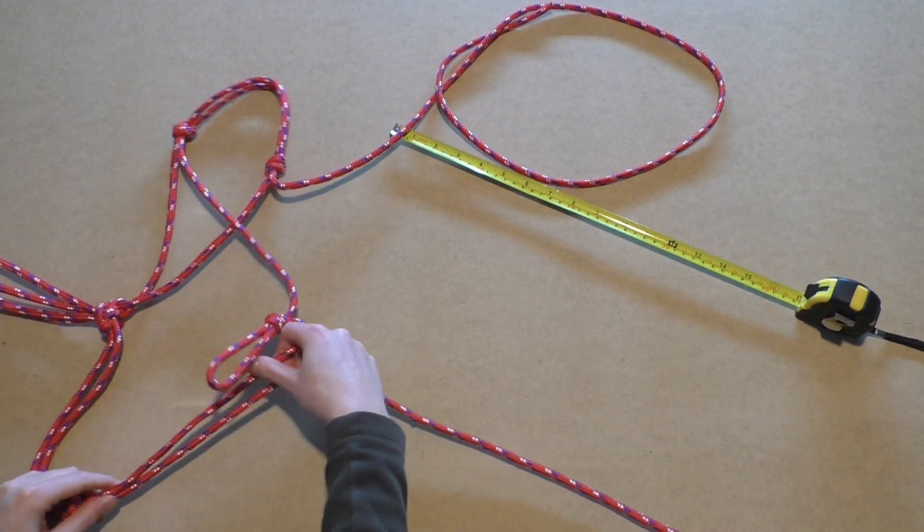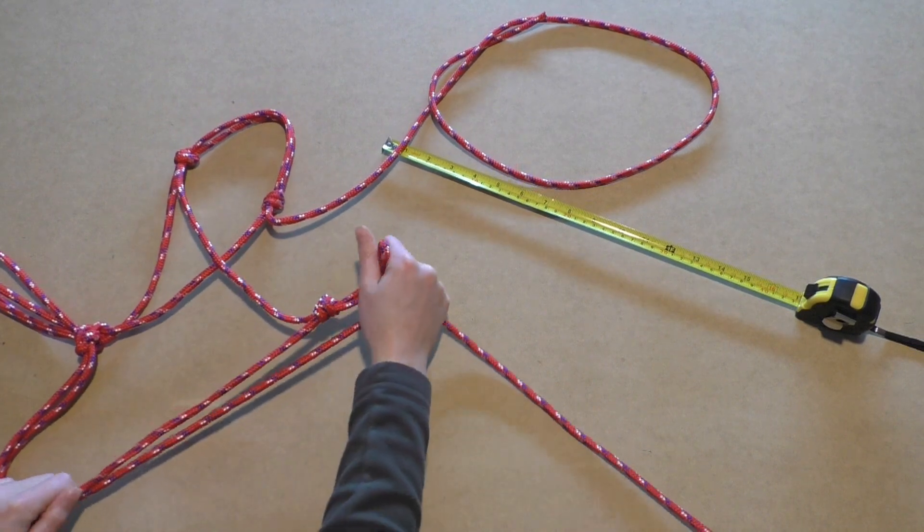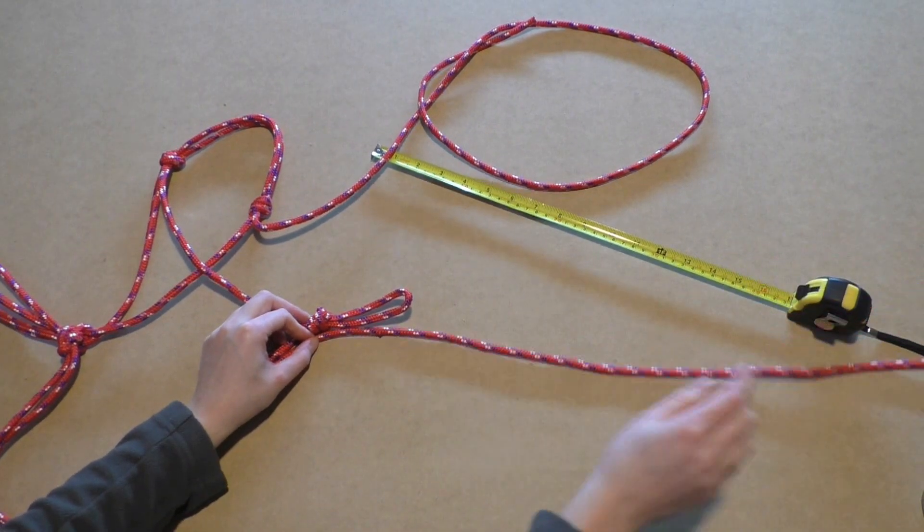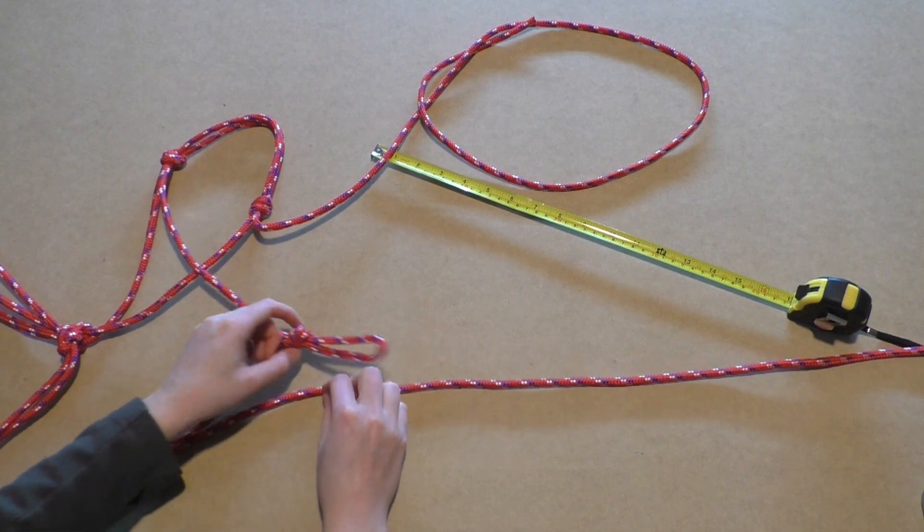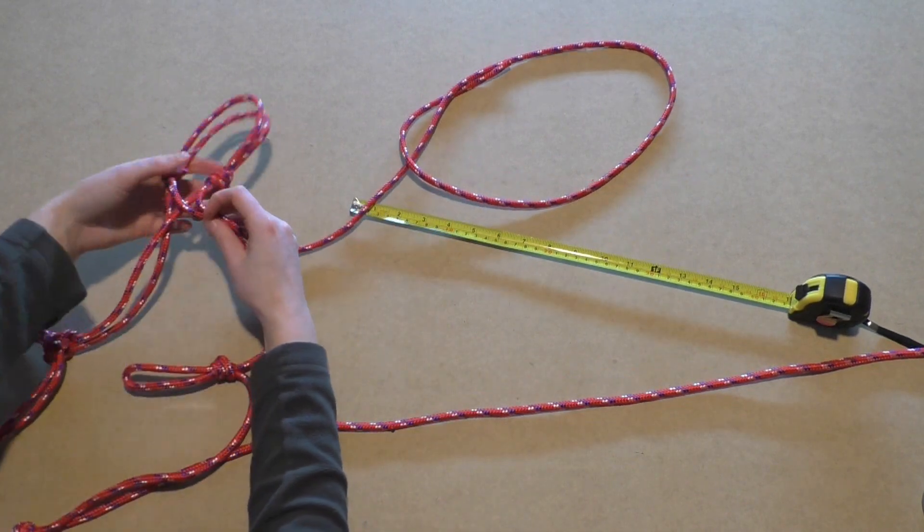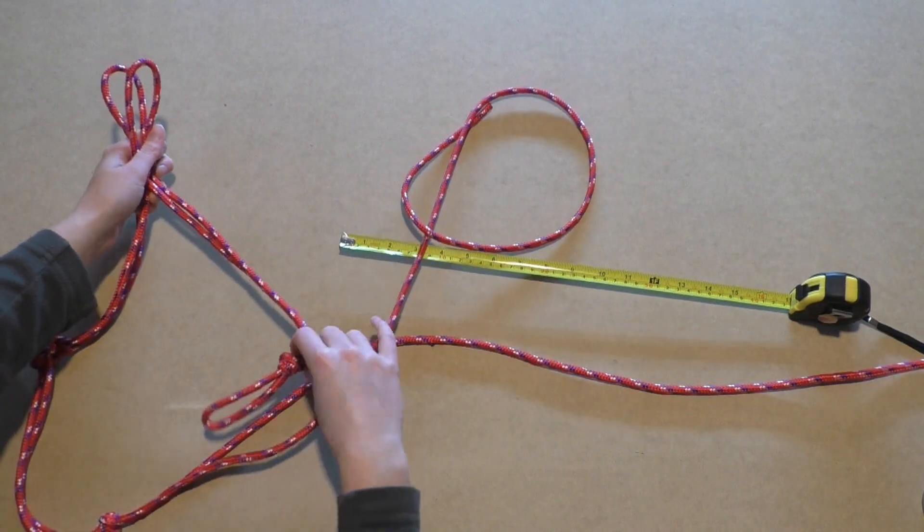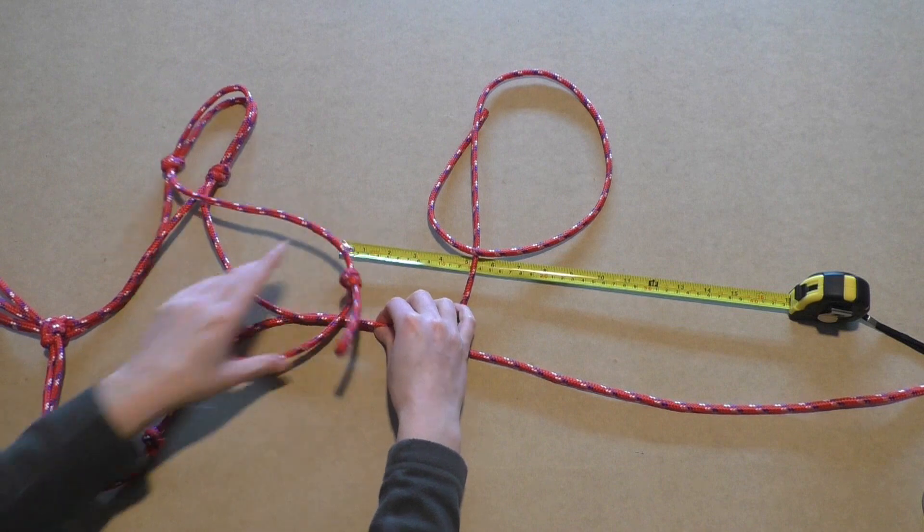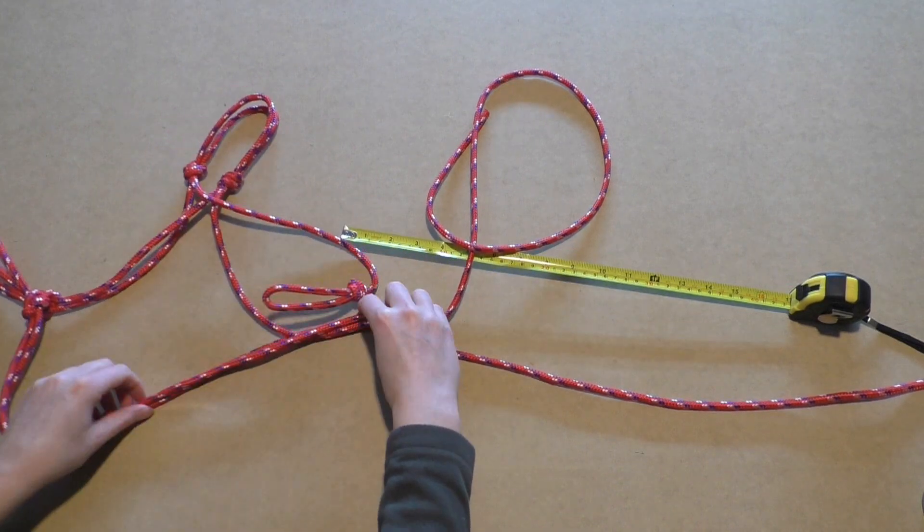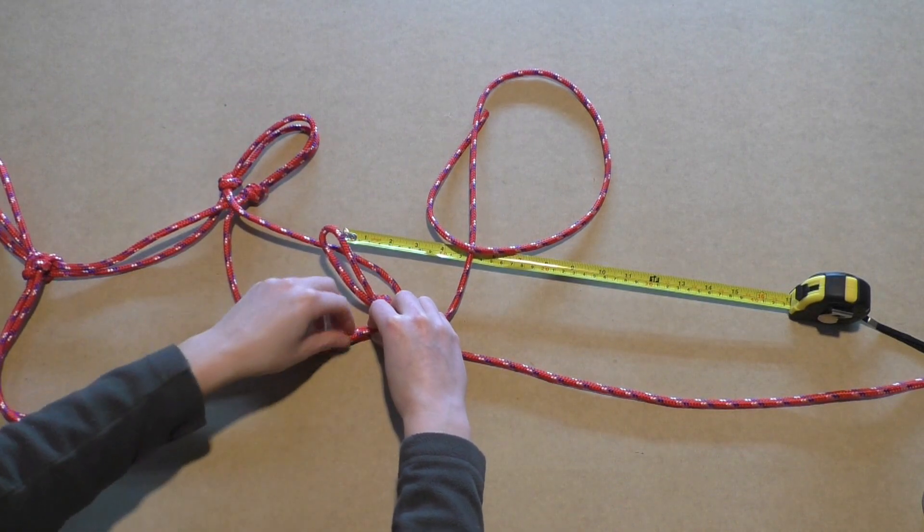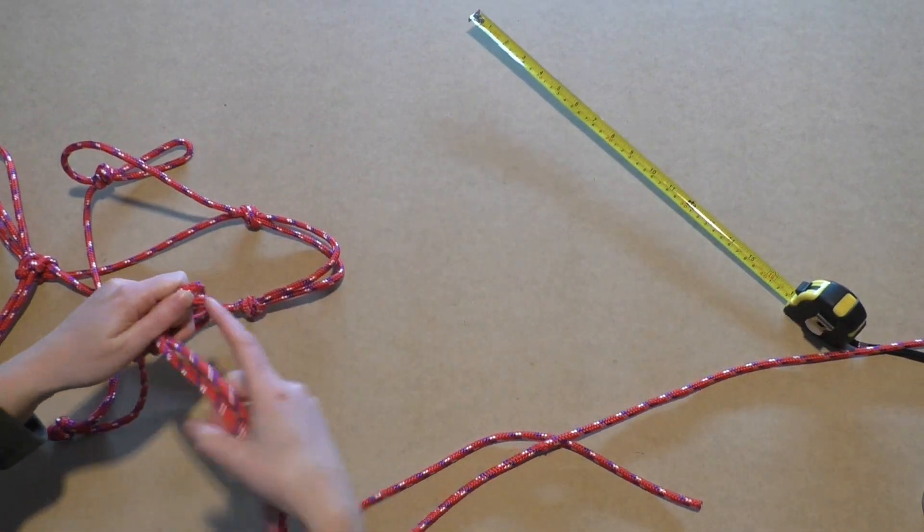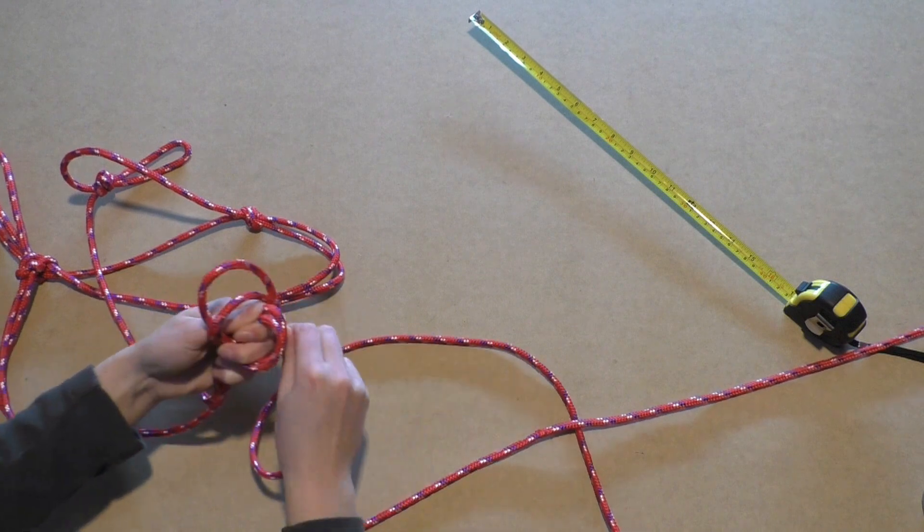Take the short end of the rope and measure the distance until the overhand loop. Then take the long end and make sure you make this as long as the distance between the overhand loop and the noseband. Grab the short and long ends together at the measured distances and tie an overhand knot.